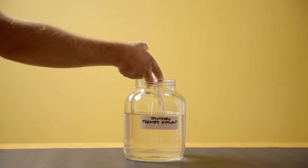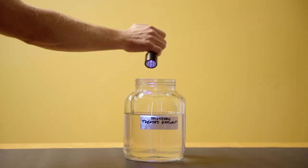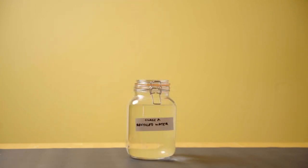The secondary effluent is given two doses of ozone to make it crystal clear. The water is disinfected with ultraviolet light and chlorine. The result is Class A recycled water.